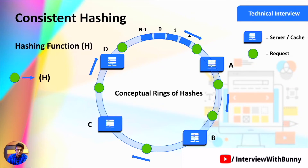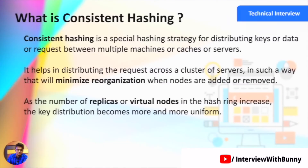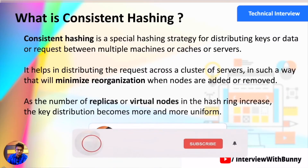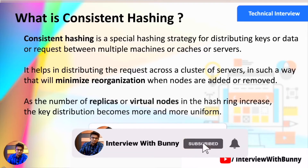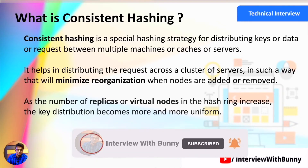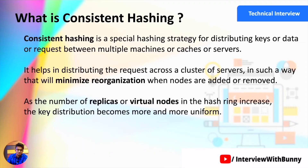Now let's understand consistent hashing theoretically. Consistent hashing is a special hashing strategy for distributed systems by which any key or data is distributed across multiple servers or caches. With the help of consistent hashing, we normally minimize the reorganization effort involved in adding and removing servers from a distributed system.